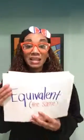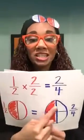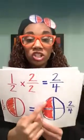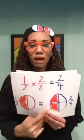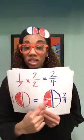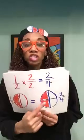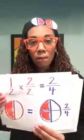So when we multiply the equivalent, we ain't changing the amount — we ain't changing the amount. We're just changing the number of equal parts.